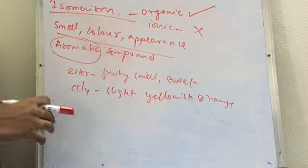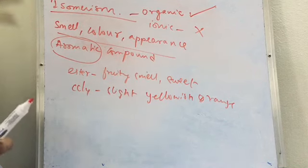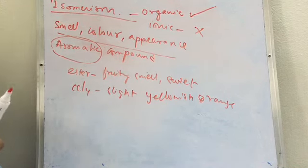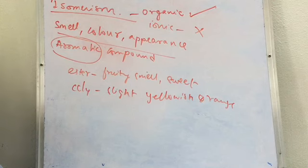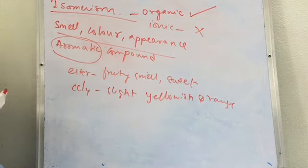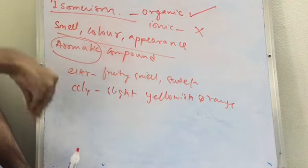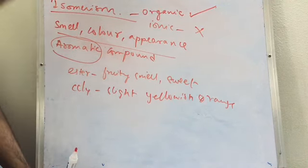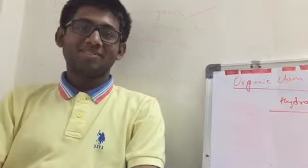Apart from that, the next point is combustibility. Organic compounds catch fire easily — that is what combustibility means. That one factor is enough to differentiate between ionic and organic compounds. Ionic compounds do not catch fire easily. You can look in the textbook — there is a tabular column with around 10 points. I have covered the important points which require explanation; the rest you can look into.